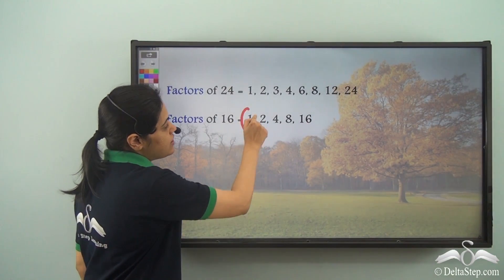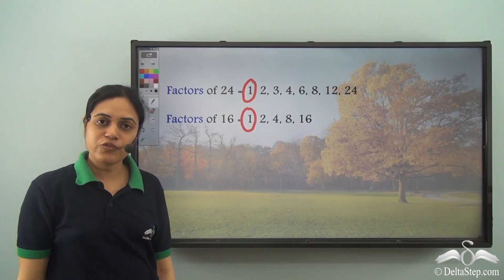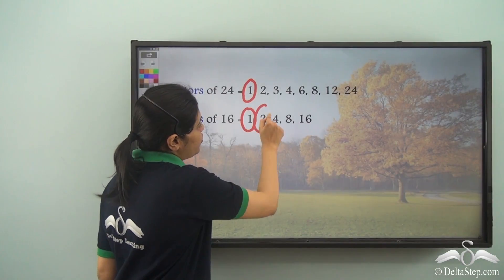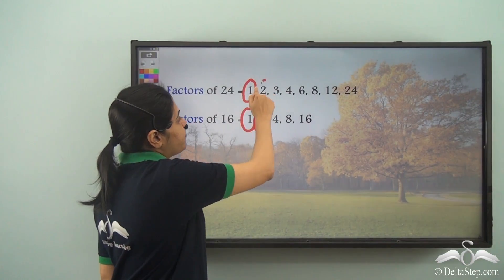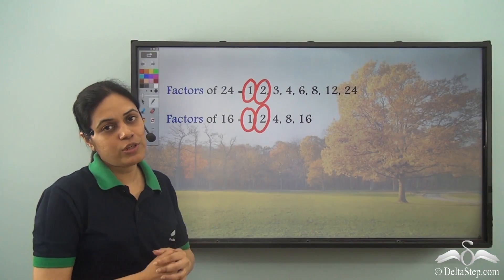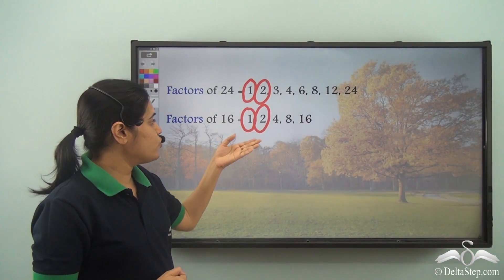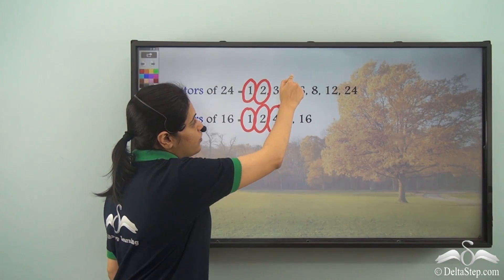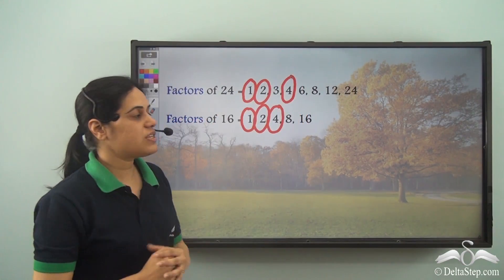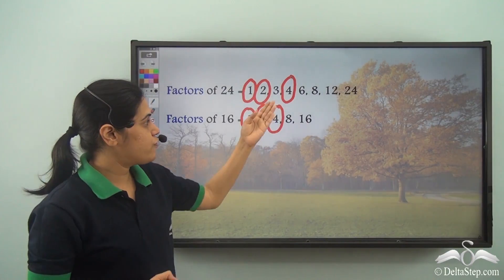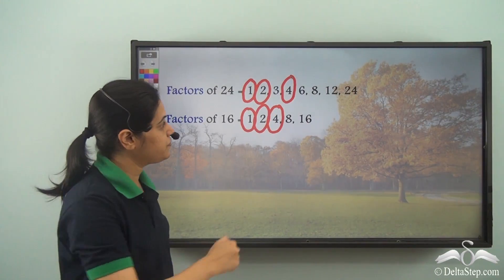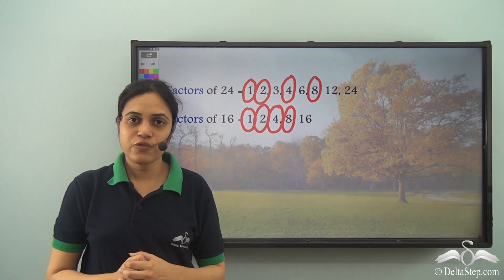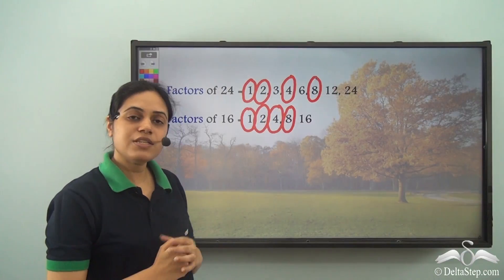1 is a factor of 16 and a factor of 24, so it is a common factor. 2 is a factor of 16 and a factor of 24, so 2 is a common factor. 4 is a factor of 16 and a factor of 24, so 4 is a common factor. 8 is a factor of 16 and a factor of 24, so 8 is a common factor.